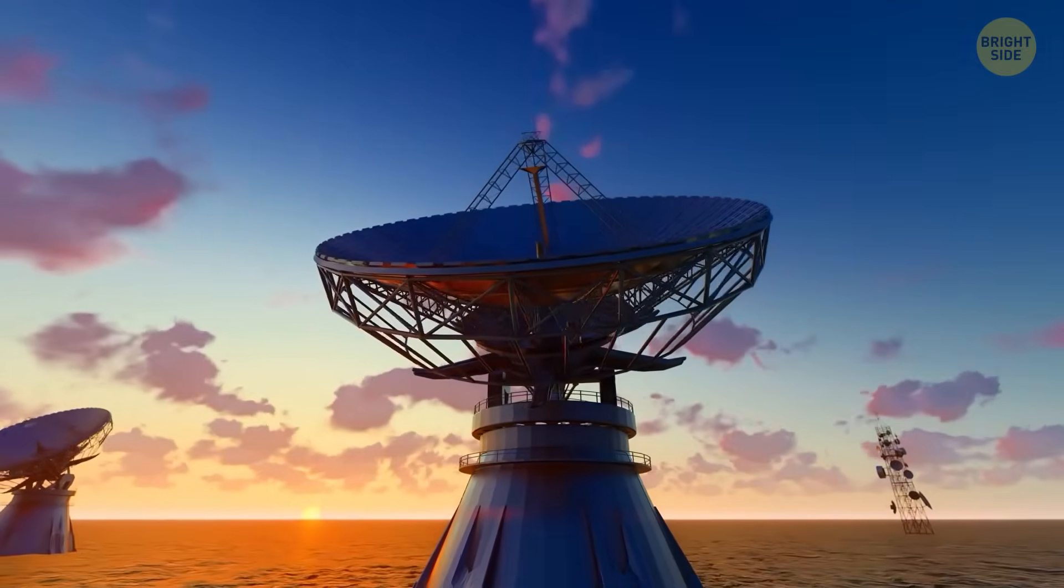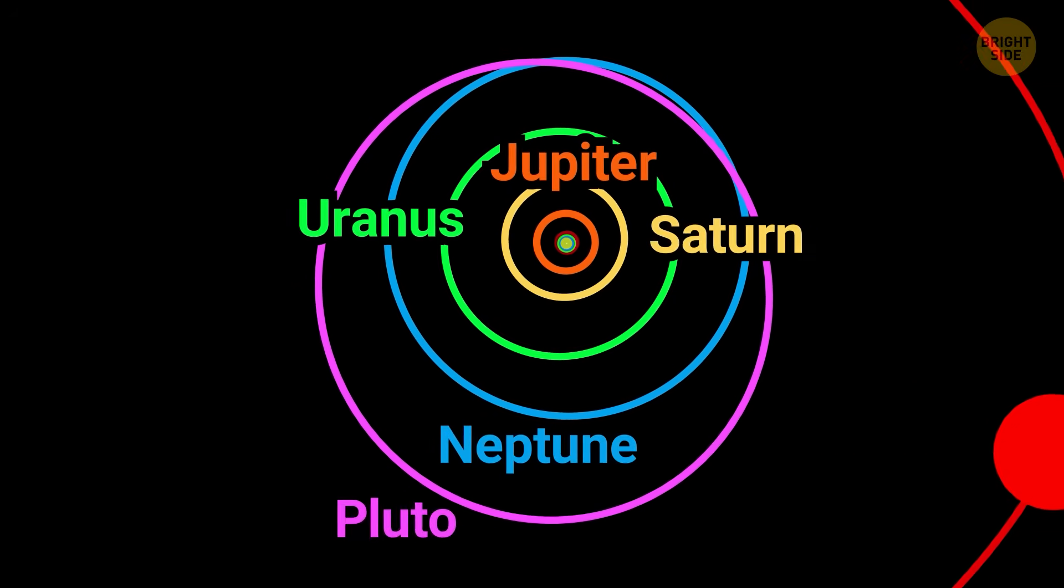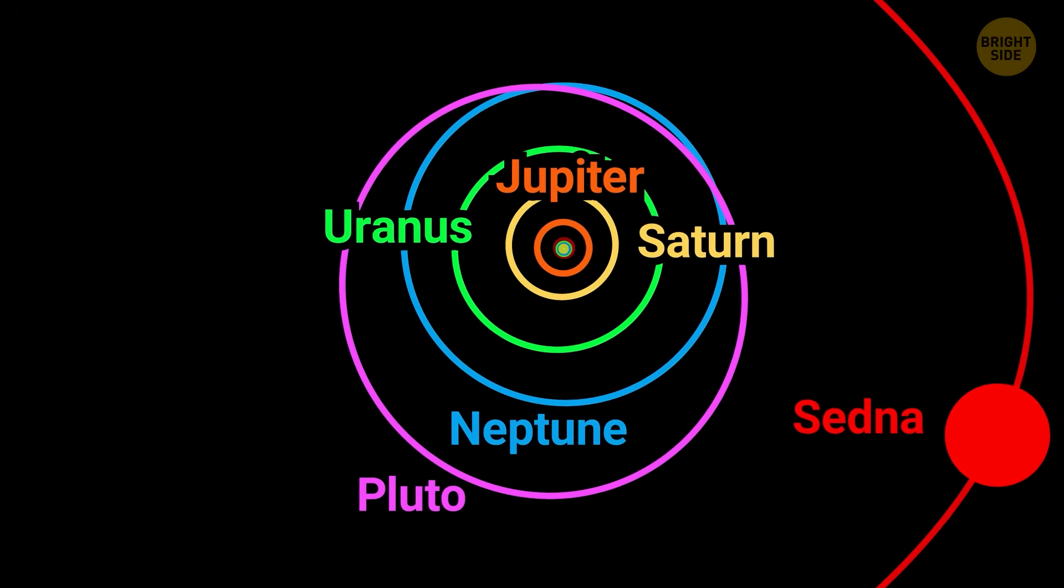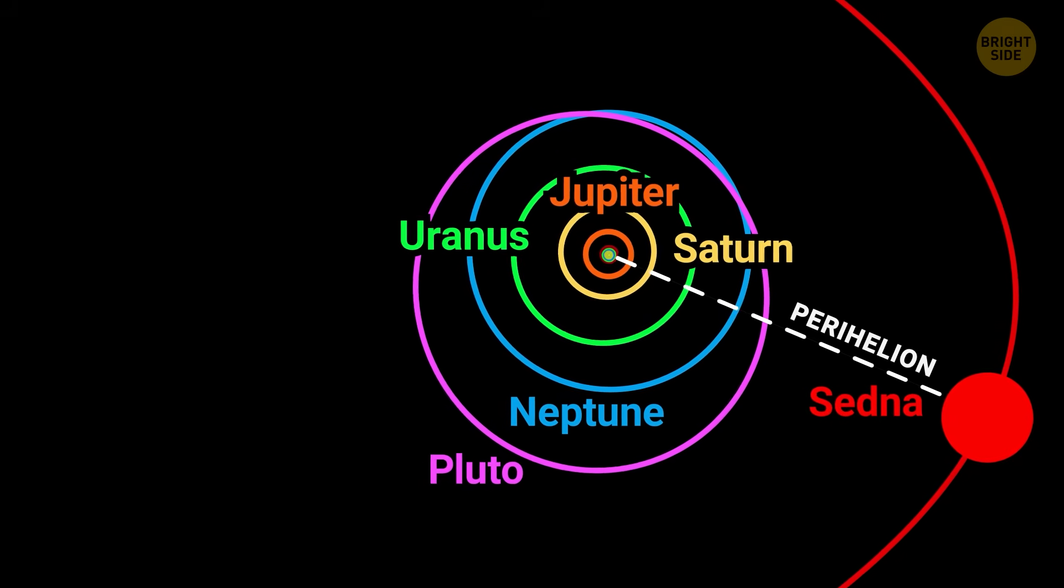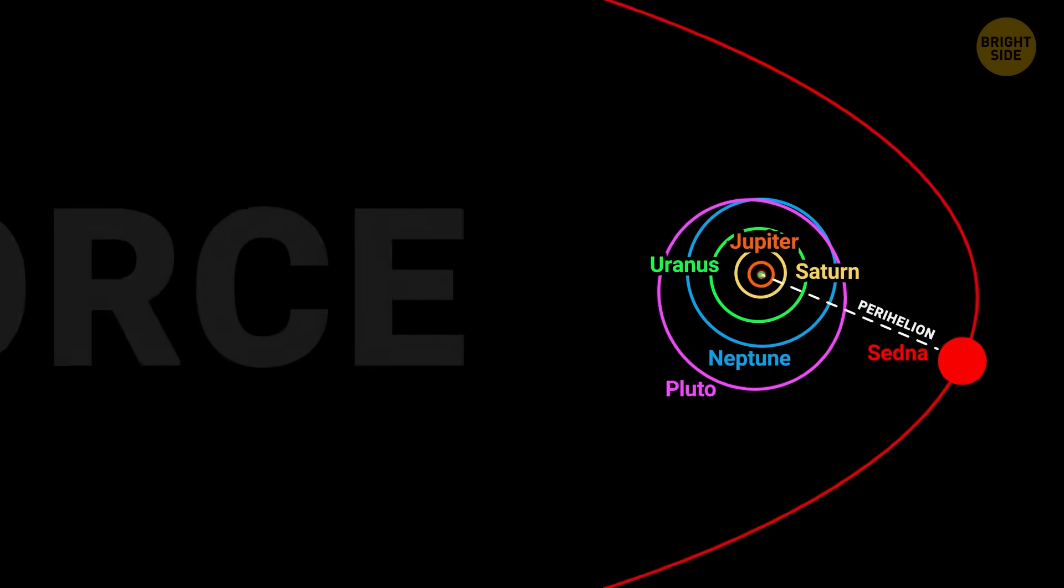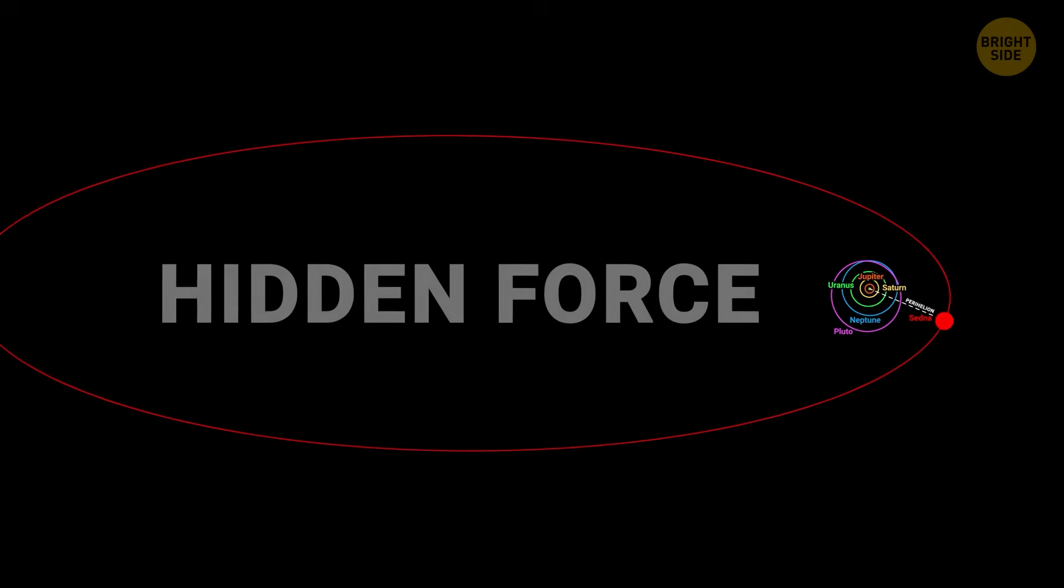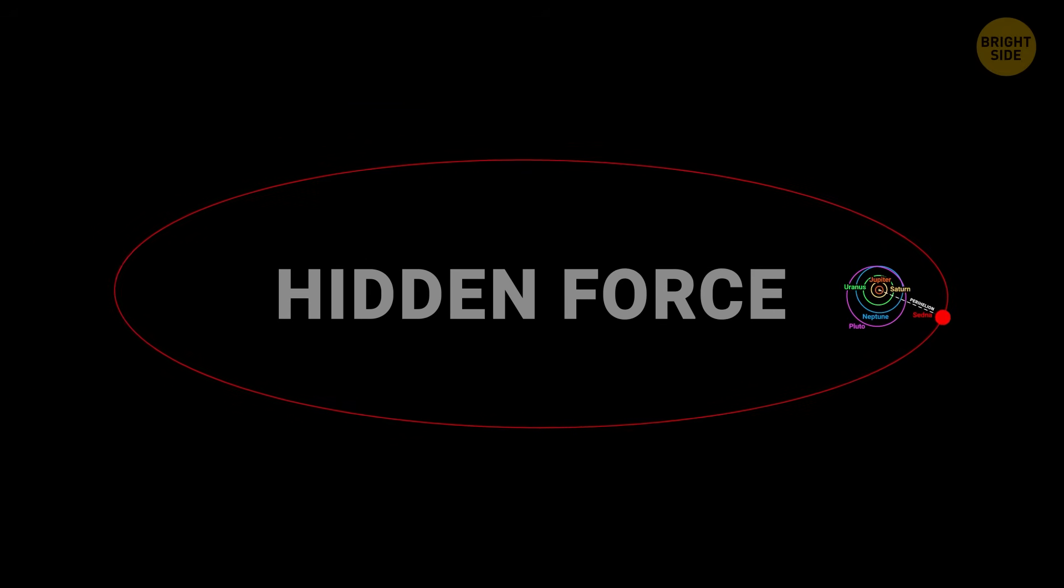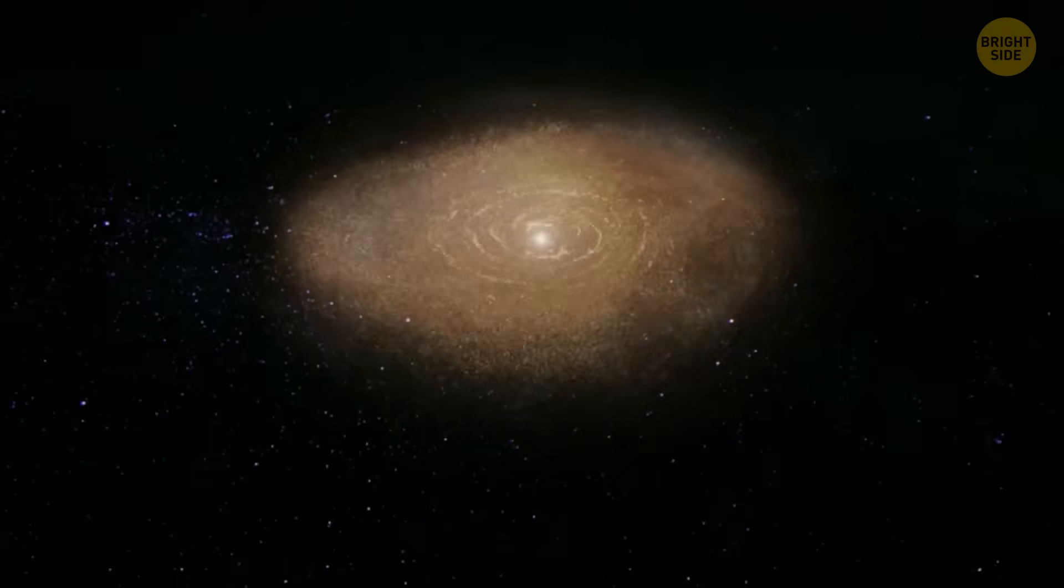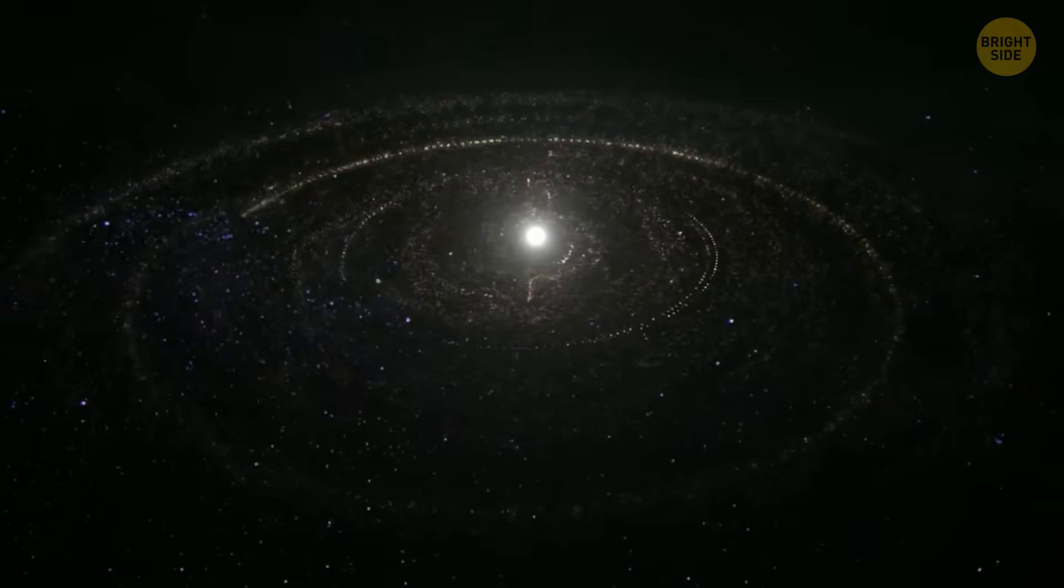In 2004, scientists found a weird little world called Sedna. It had a strange path around the Sun that didn't seem to be affected by any of the known planets. Its closest point to the Sun, called perihelion, is way too far for Neptune to be the reason. This made some scientists wonder if Sedna got pushed into its path by a hidden planet, maybe even something as big as Earth or bigger. Others thought maybe it was a star that flew by a long time ago, or another star that formed near ours.